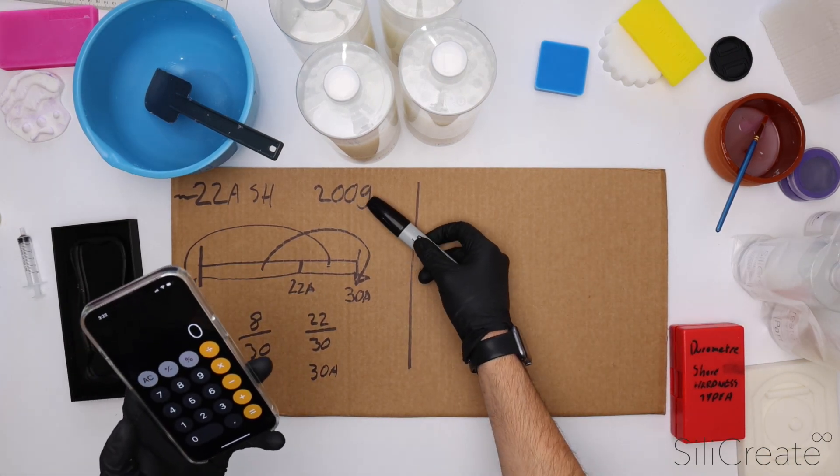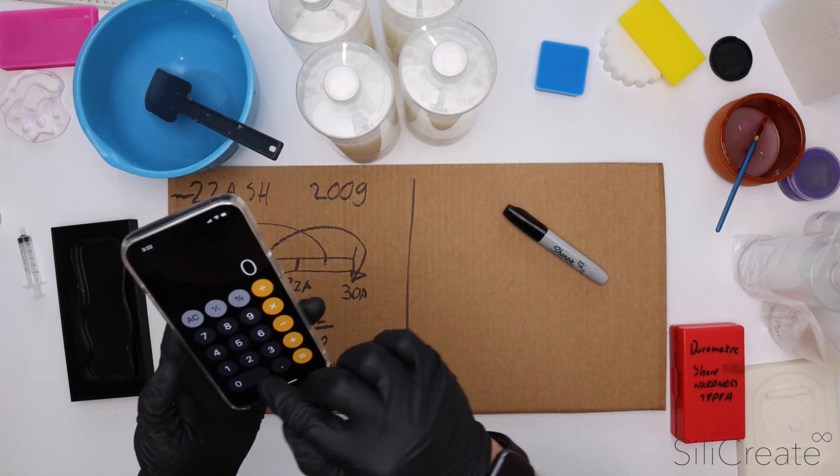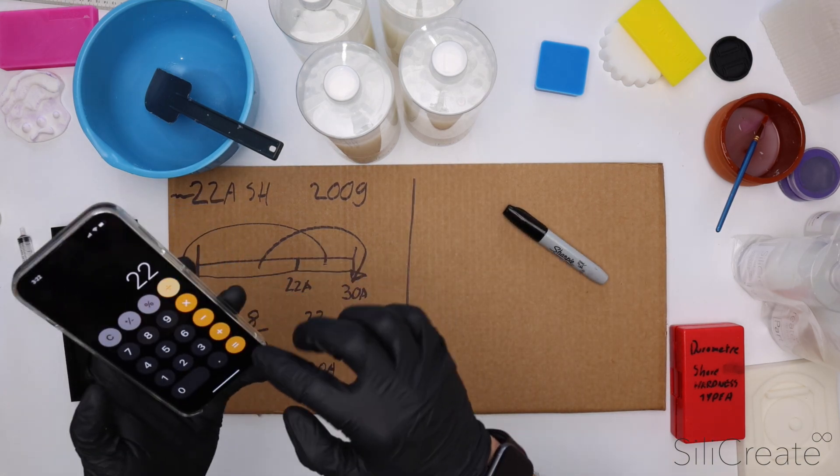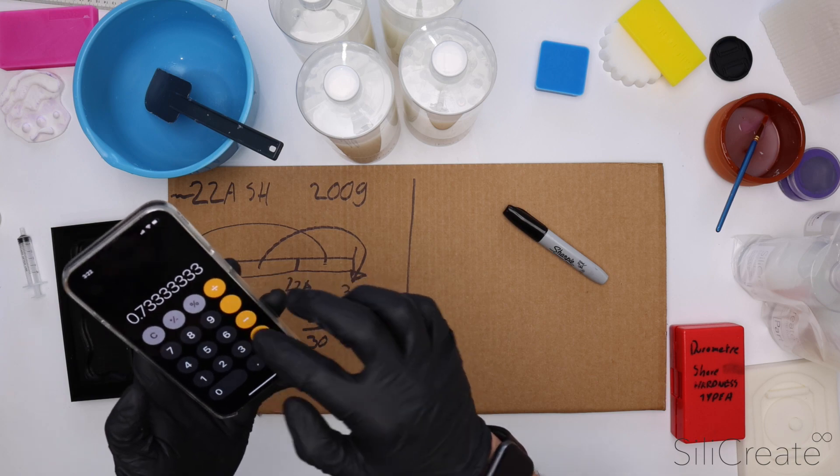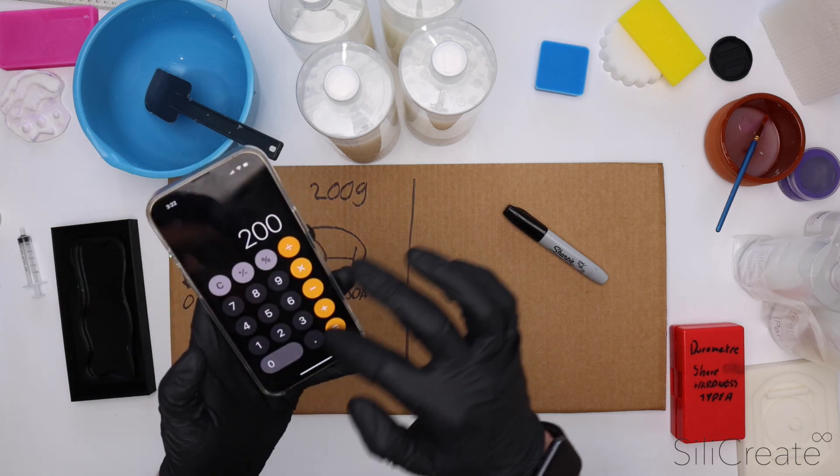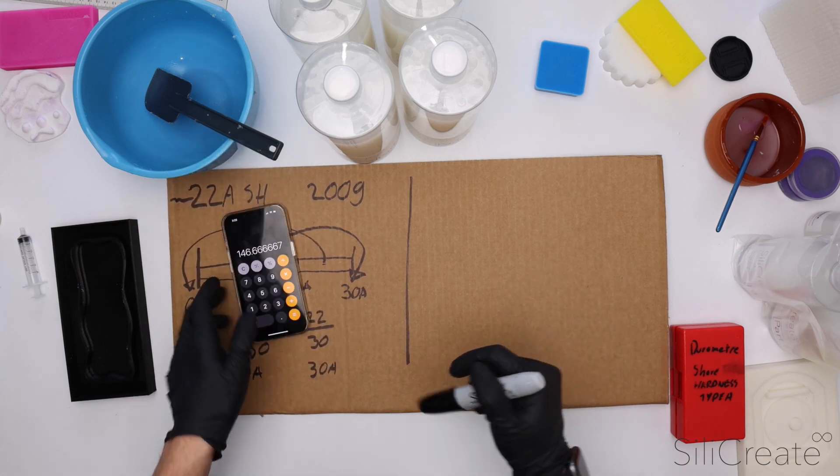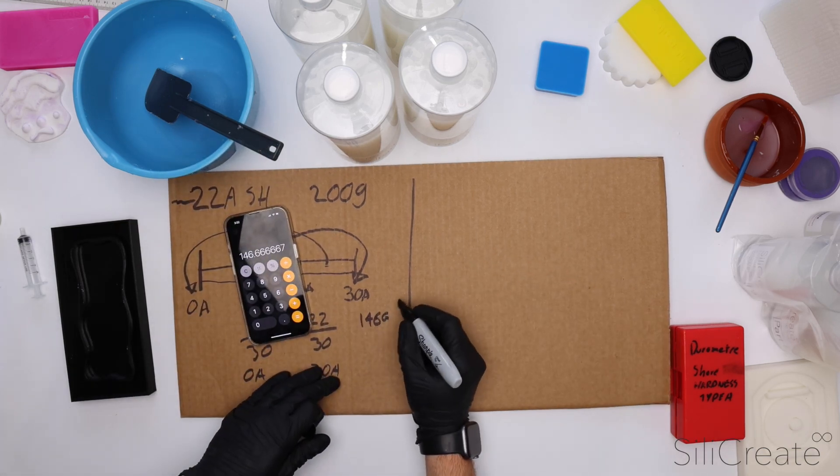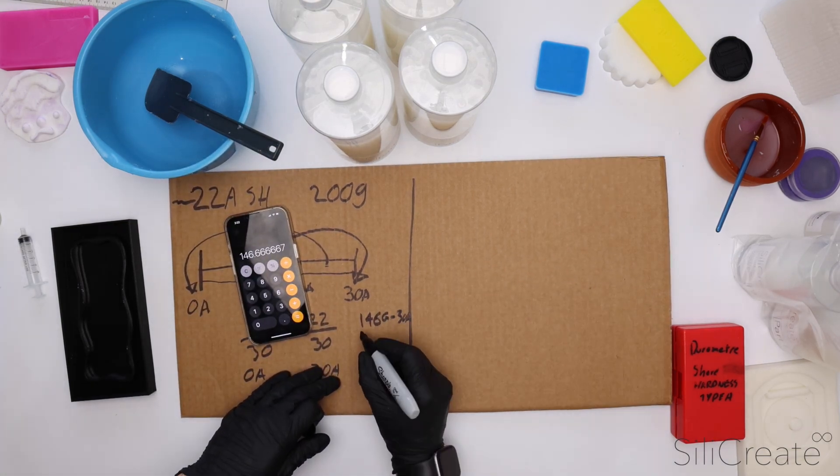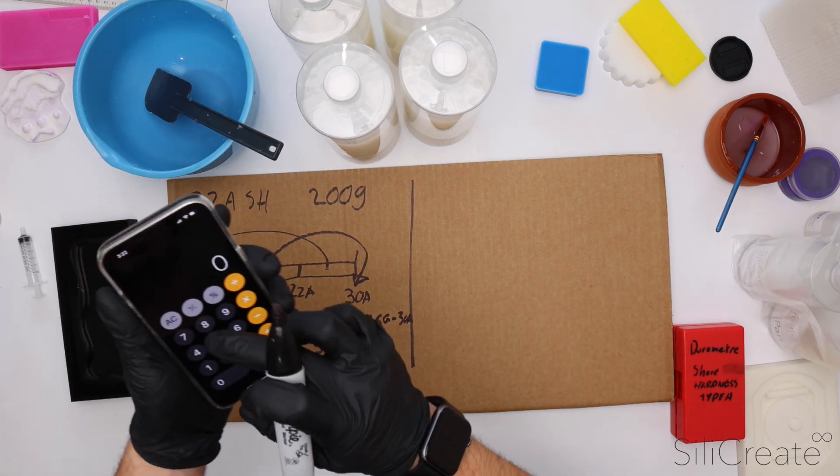So we know we're going for 200 grams, and so we'll say 22 divided by 30 times by 200. So we know we'll need about 146 grams of the 30A.